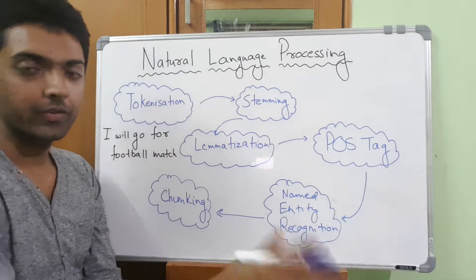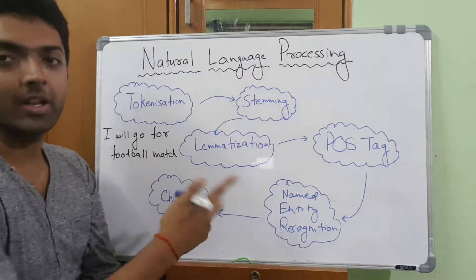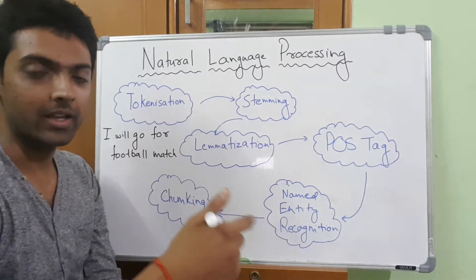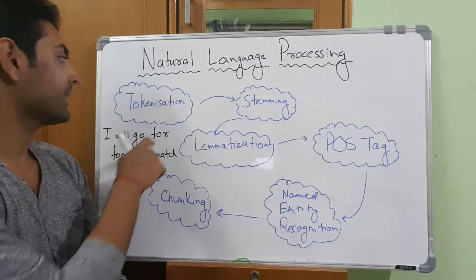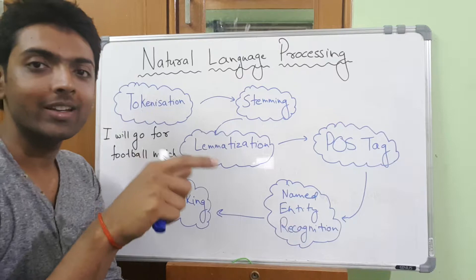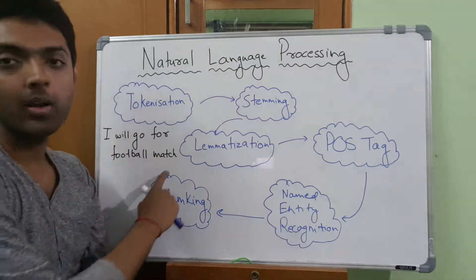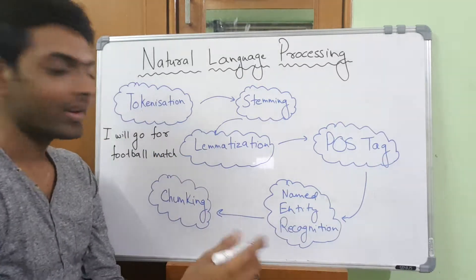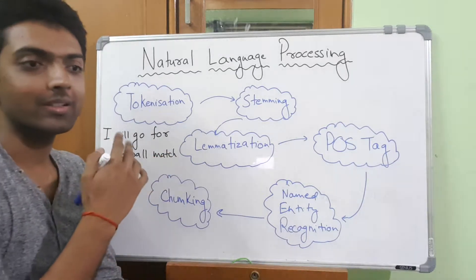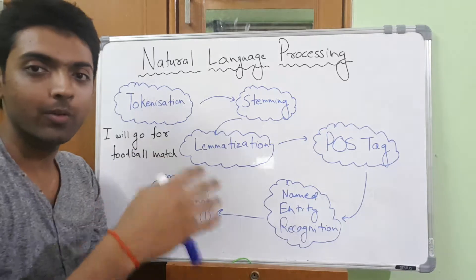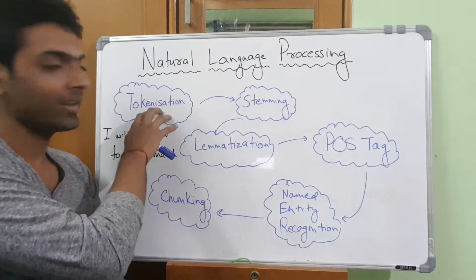The first step is tokenization. For example, the machine is learning: 'I will go for a football match.' While learning how a person is speaking, what it will do in tokenization is remove all the tags of the sentence. For example, 'I go football match.' It doesn't need to understand 'will' and 'for' because those are part of the sentence flow. The tags are: I, go, football, match. So tokenization has been done.